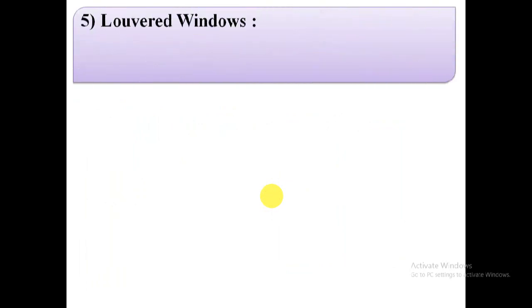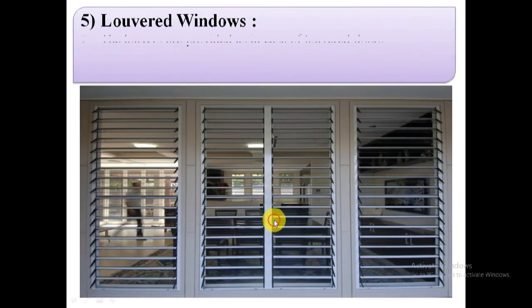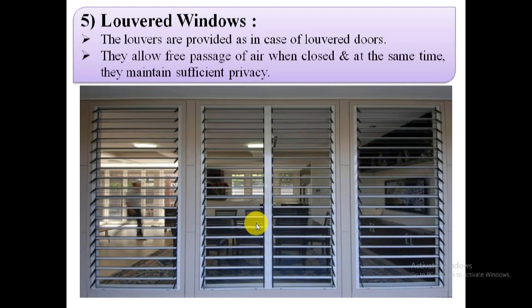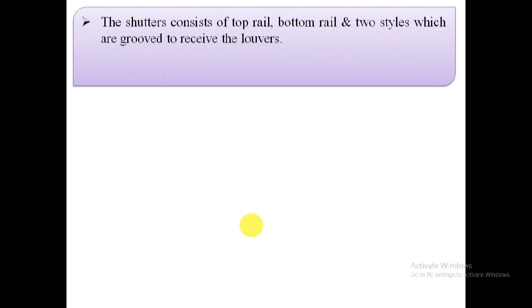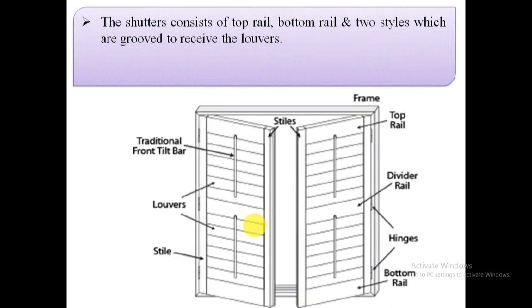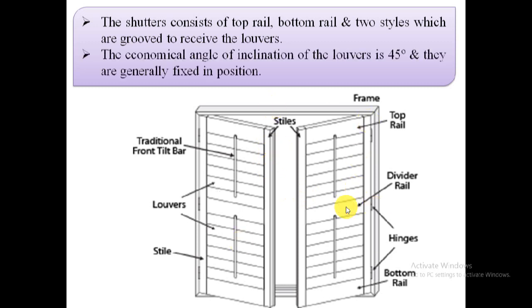The fifth type is louvered windows. Here the louvers are provided as in the case of louvered doors. Louvered windows allow free passage of air when closed and at the same time maintain sufficient privacy. The shutters consist of a top rail, bottom rail, and two styles which are grooved to receive the louvers. The economical angle of inclination of the louvers is 45 degrees and they are generally fixed in position.